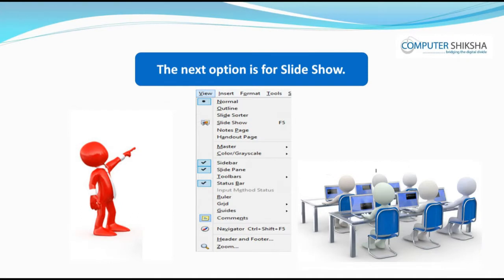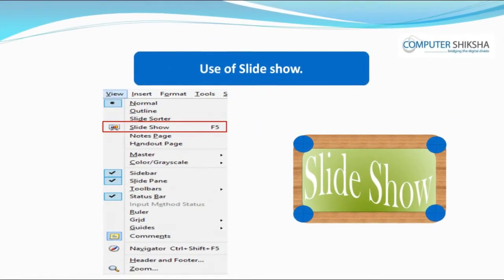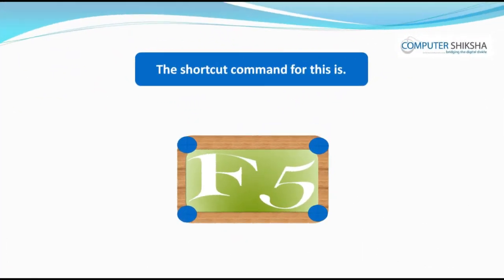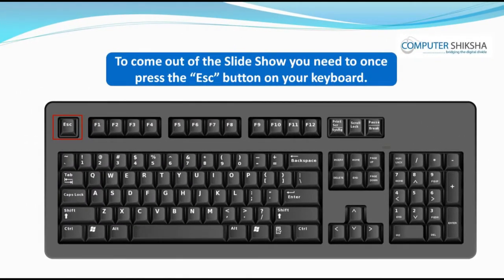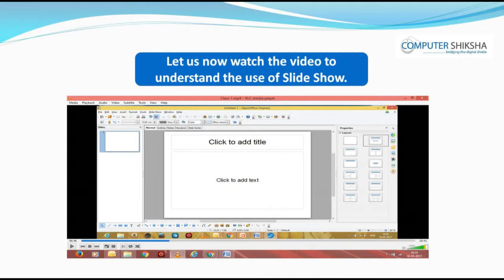The next option is for Slide Show. Using Slide Show, you can watch your slides on the big screen. This will only show you the slide on which you have worked. The shortcut command for this is F5. To come out of the slide show, you need to press the Escape button on your keyboard and your slide will then appear in the normal view.